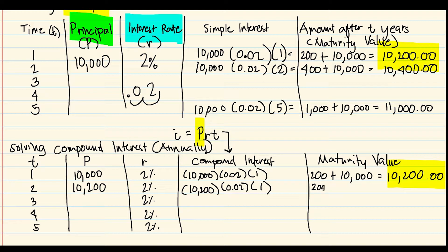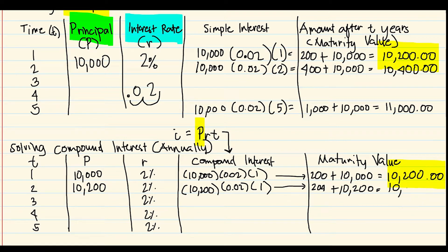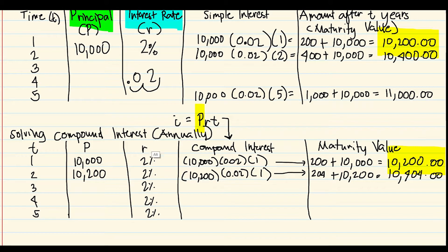The compound interest for year two is 204 pesos. Adding to the principal of 10,200 gives 10,404 pesos — not 10,400 as in simple interest. So the compound interest is already bigger after two years by 4 pesos.